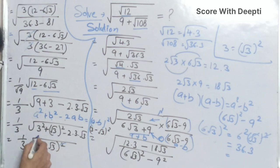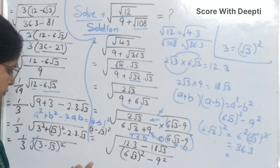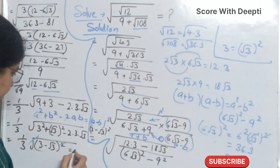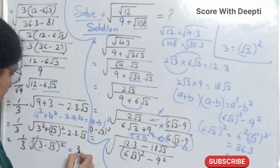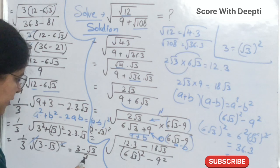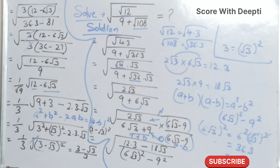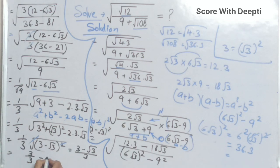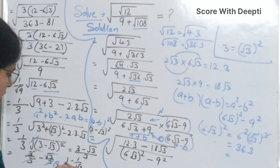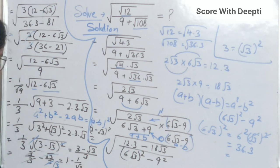Next, the square cancels with the square root. We get 1 minus 1 over square root 3. So this is our final answer.